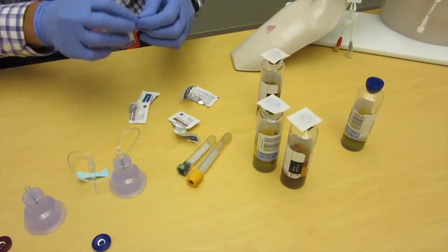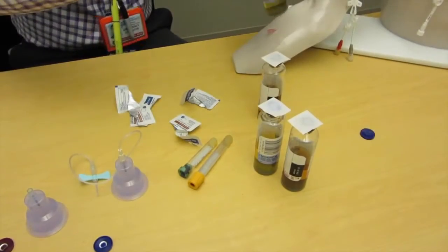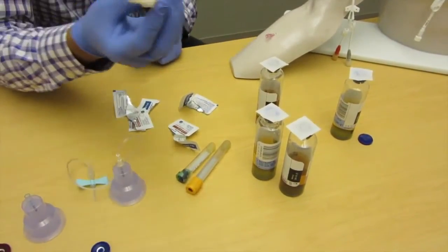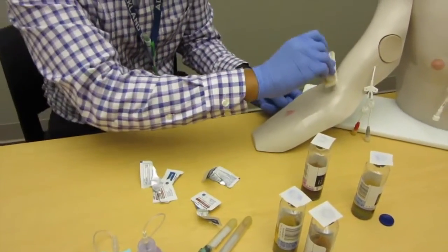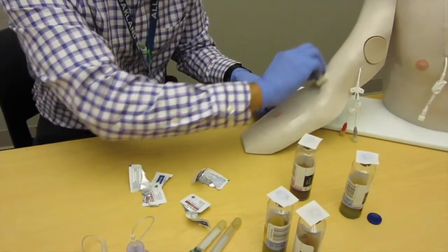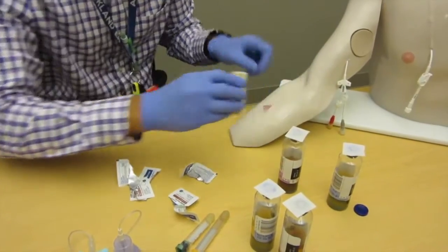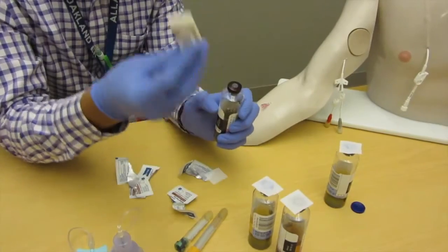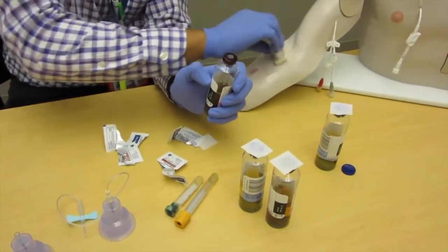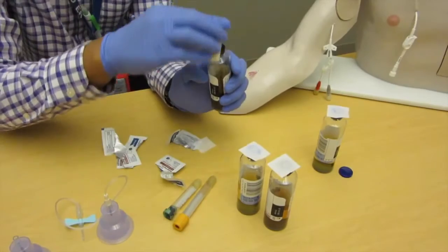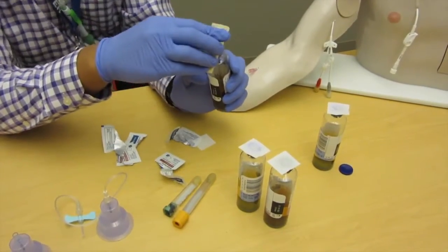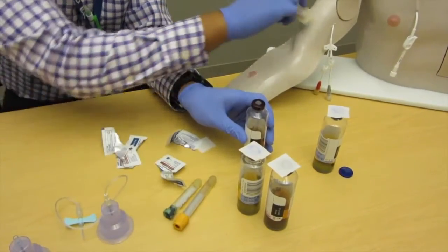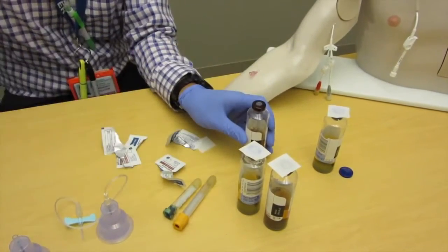One other mistake that can happen is this: some people, after they scrub for 30 seconds, take the same chloroprep they scrubbed with and start scrubbing the top. What did you just do? You just took the skin cells and you scrubbed them off this arm and put them right on top of the bottle. Please make sure you do not do that. Do not use the same chloroprep scrub that you use on the arm to scrub the top of your culture bottles.